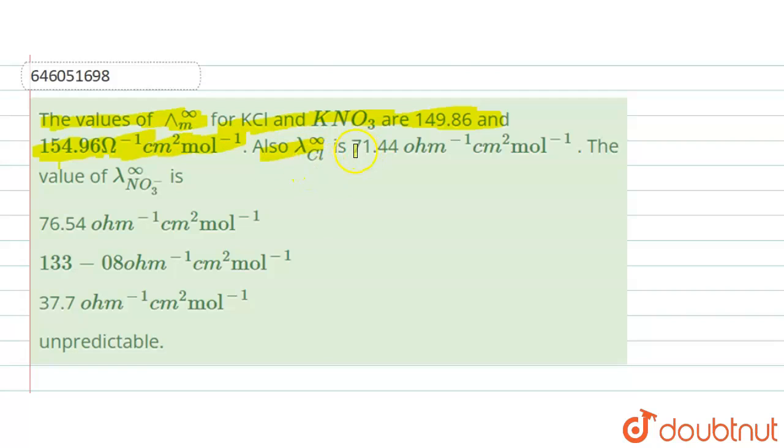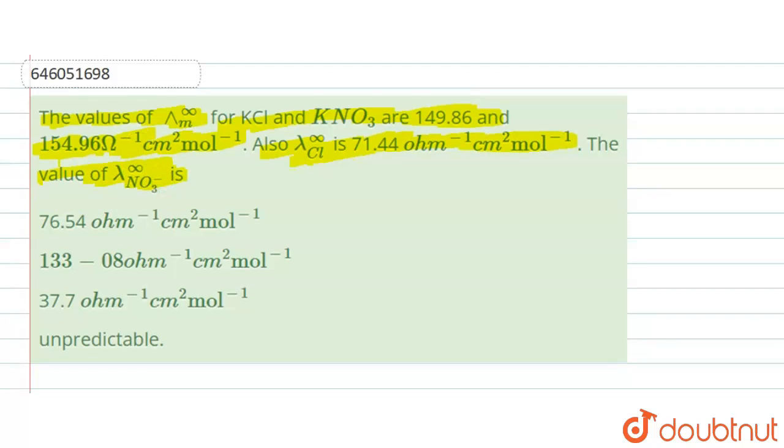The limiting conductivity value for chlorine is 71.44. So here what we need to find out is the limiting value for the nitrate ion, that is NO₃⁻.